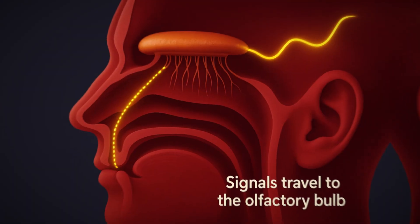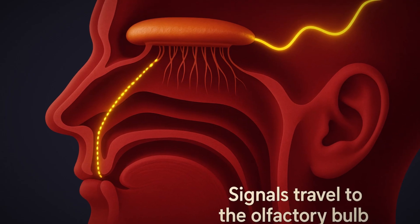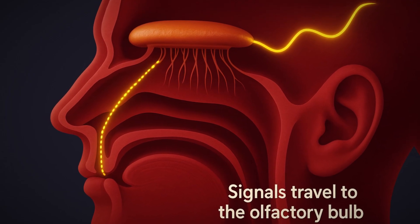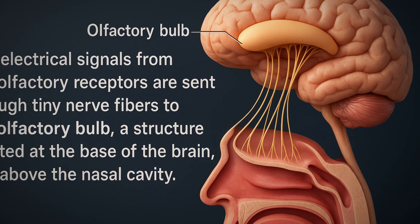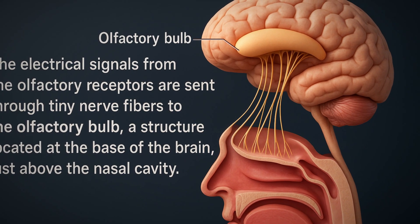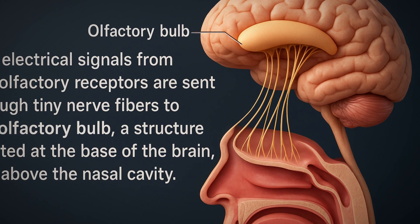Signals Travel to the Olfactory Bulb. The electrical signals from the olfactory receptors are sent through tiny nerve fibers to the olfactory bulb, a structure located at the base of the brain, just above the nasal cavity.